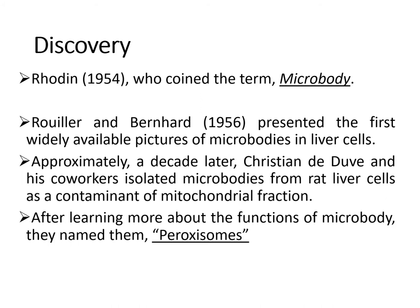Rouiller and Bernhard in 1956 presented the first widely available picture of microbodies in liver cells. Nearly a decade later, Christian De Duve and his co-workers isolated microbodies from rat liver cells as a contaminant of the mitochondrial fraction. De Duve and his co-workers did not like the term 'microbody' as it was too general and strictly morphological. After learning more about the function of microbodies, they renamed them peroxisomes.